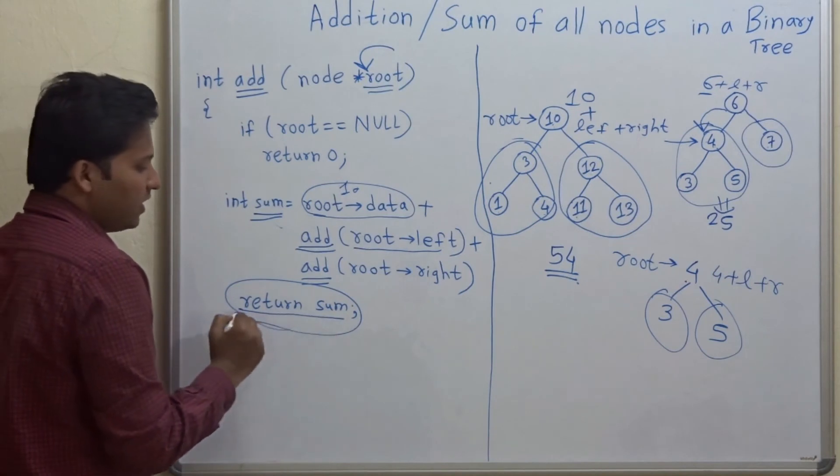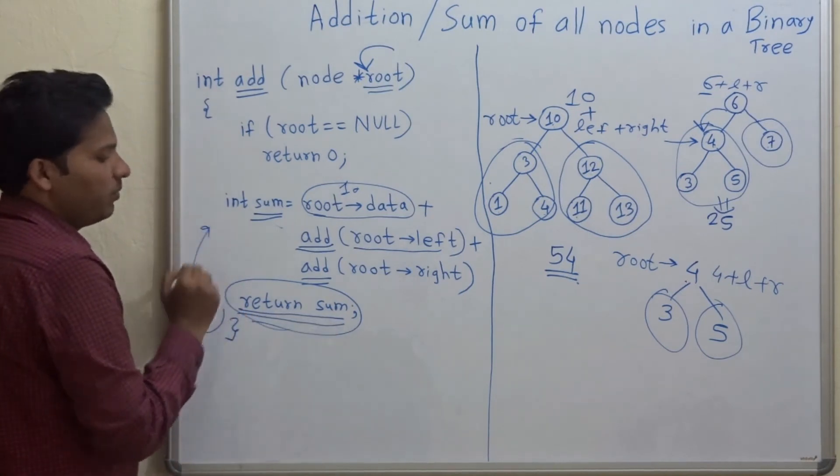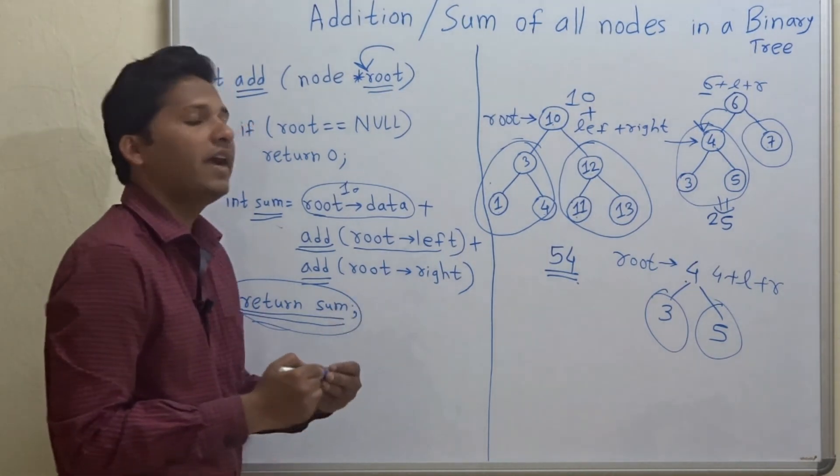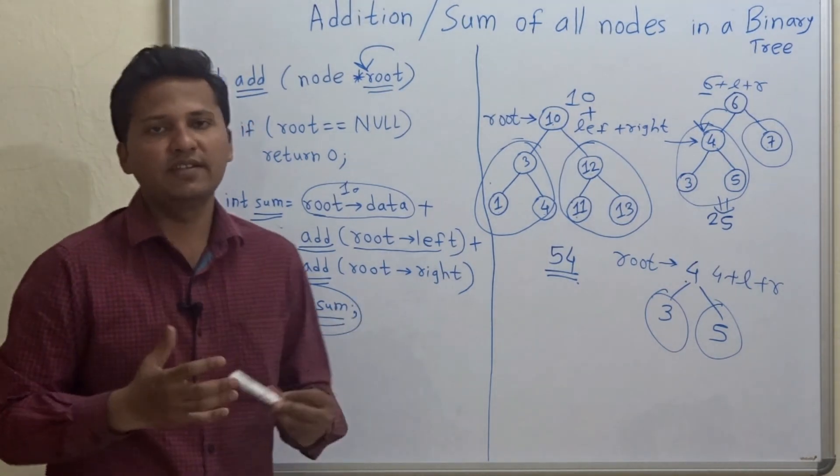And finally, we return the sum to our main function. So this is how we calculate the addition of all nodes in a binary tree. Thank you.